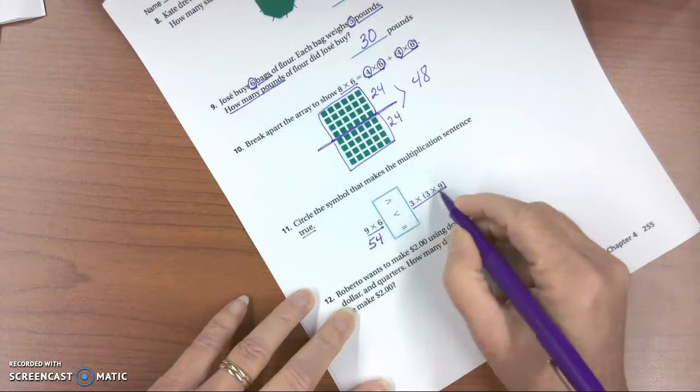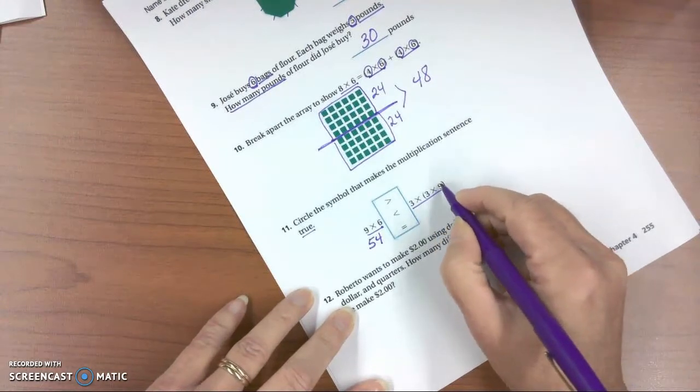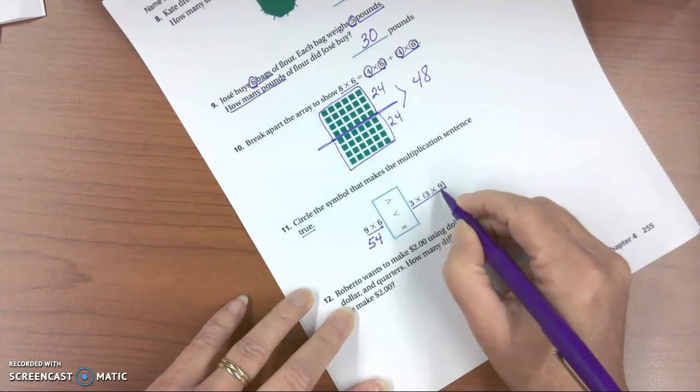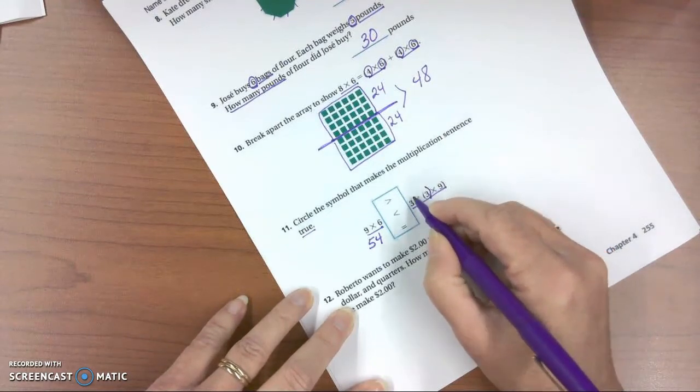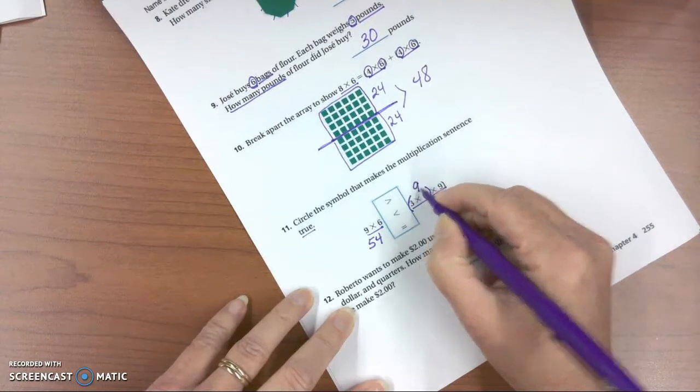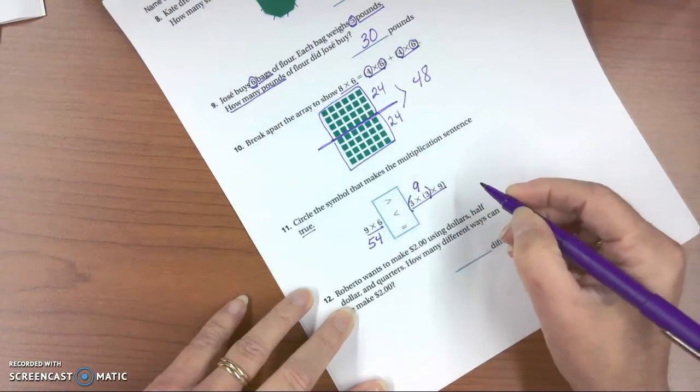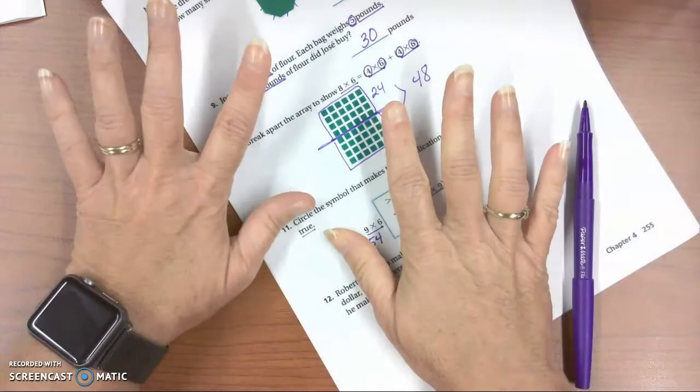And here, because of the associative property, I'd rather not say 3 times 9 is 27 than 27 times 3. I would prefer to work it like this, using the associative property, and say 9 times 9. And 9 times 9,